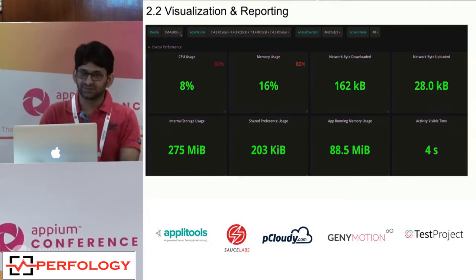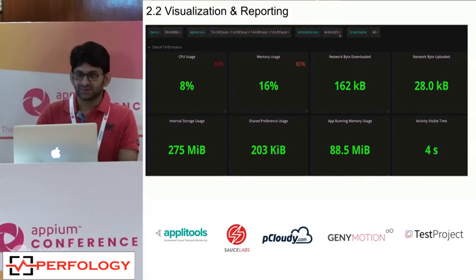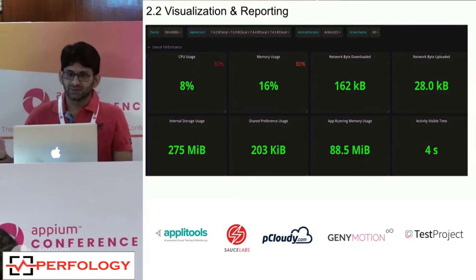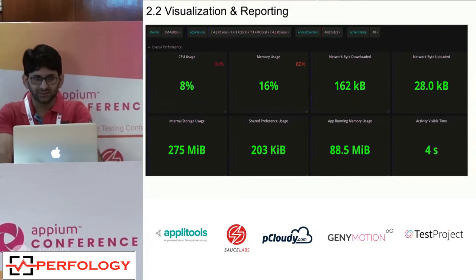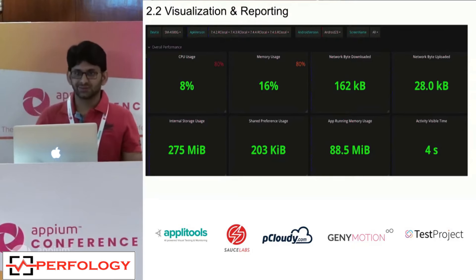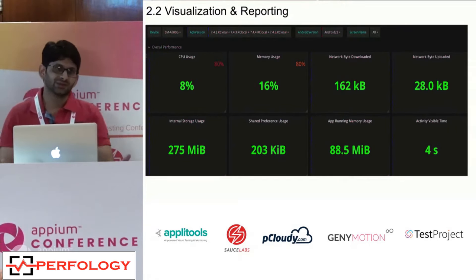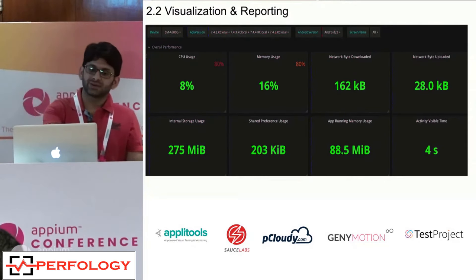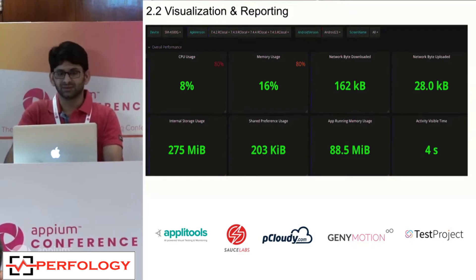Once the data is in the database, we publish it in a way that supports device-level checks. Because the application runs on multiple devices with different API versions, we can check, for example, what average memory or CPU usage looks like on Android API 23 versus Android 24 or 25. Android has fragmented operating systems, so metrics vary by API level and internal processing differences. Screen sizes also differ — 4.5 inch, 5 inch, 6 inch — so we have different test devices configured for capturing data.